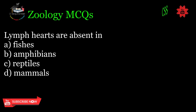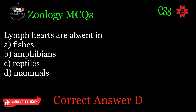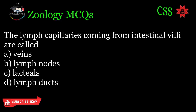Lymph hearts are absent in: A. Fishes, B. Amphibians, C. Reptiles, D. Mammals. Correct answer: D.